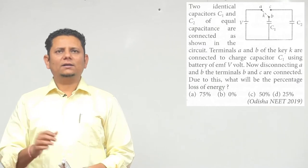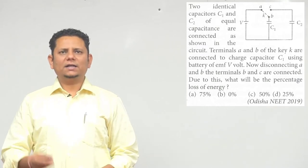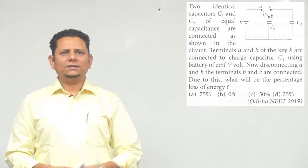Next question. Question says, two identical capacitors C1 and C2 of equal capacitance are connected as shown in the figure, as shown in the circuit.